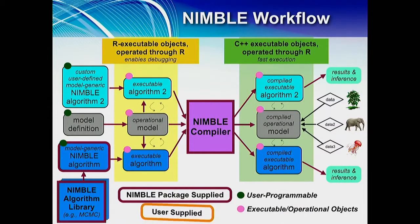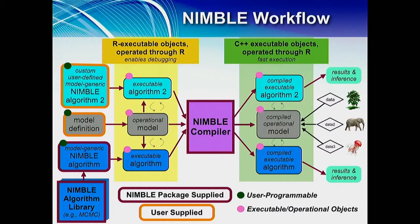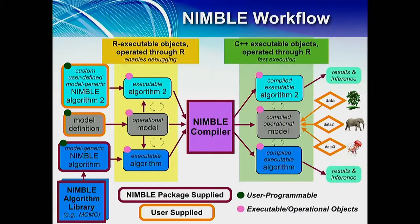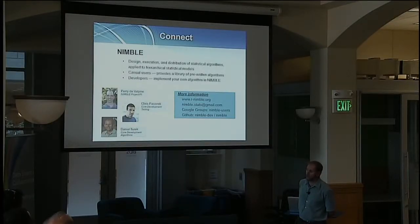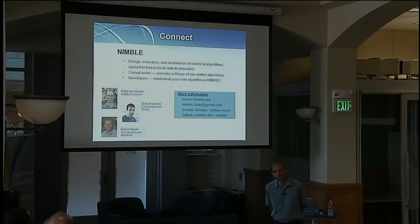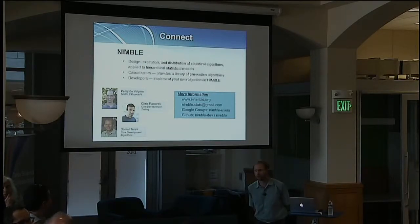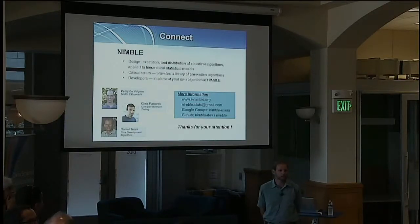The user supplies in this workflow, of course, the model definition, defining the relationships they'd like to define. The custom algorithms which they've written if they choose to. And of course the data flows in here. So in conclusion, NIMBLE is a software package for design and implementation of statistical algorithms. Casual users can make use of our pre-written algorithms in the algorithm library. And developers can write their own algorithms in the NIMBLE DSL. So a few members of our core development team are here in the audience, Perry and Chris. If you guys could just raise your hands, please. If you have any questions, please find one of us after the talk. We'd be happy to talk with you. And thank you very much for your attention.